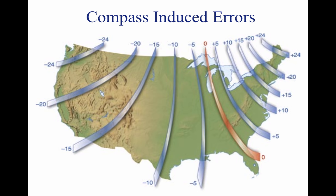Isogonic lines identify the number of degrees of variation in their area. The line that passes near Chicago is called the agonic line; anywhere along this line, the two poles are aligned and there is no variation. East of this line, the magnetic north pole is to the west of the geographic north pole, and a correction must be applied to a compass indication to get a true direction.